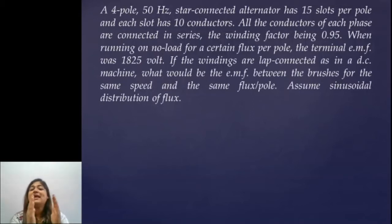When running on no-load for a certain flux per pole, the terminal EMF was 1825 volts. If the windings are lap connected as in a DC machine, what would be the EMF between the brushes for the same speed and the same flux per pole? Assume sinusoidal distribution of flux. Now this problem we are going to solve in two parts.